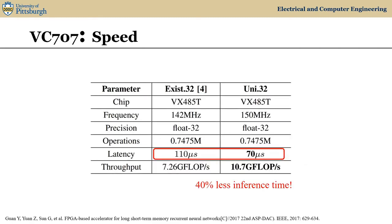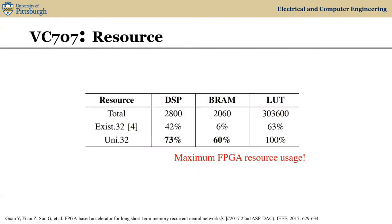For VC-707, our inference time is 40% less than the reference designs. And we can also fully utilize the device resource to buffer all the weights on the chip.